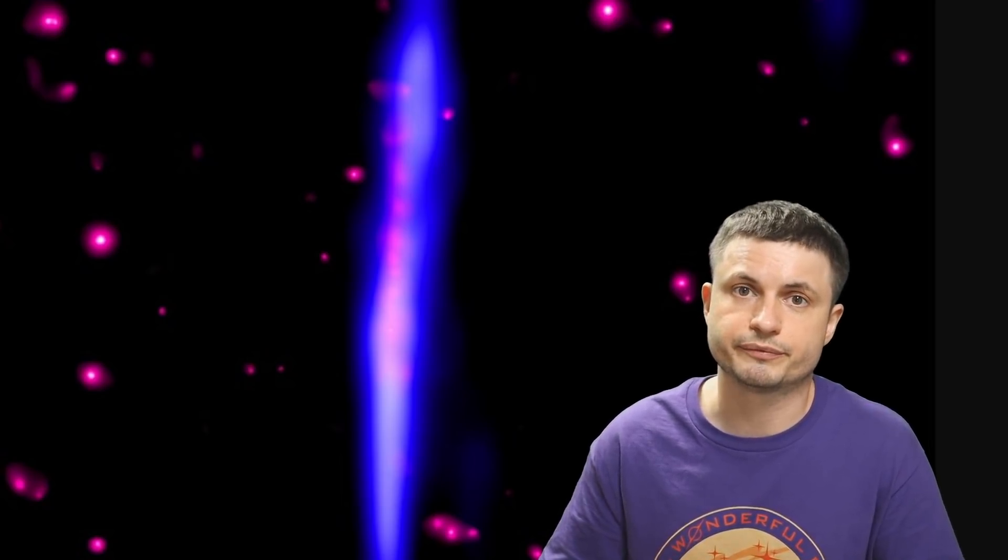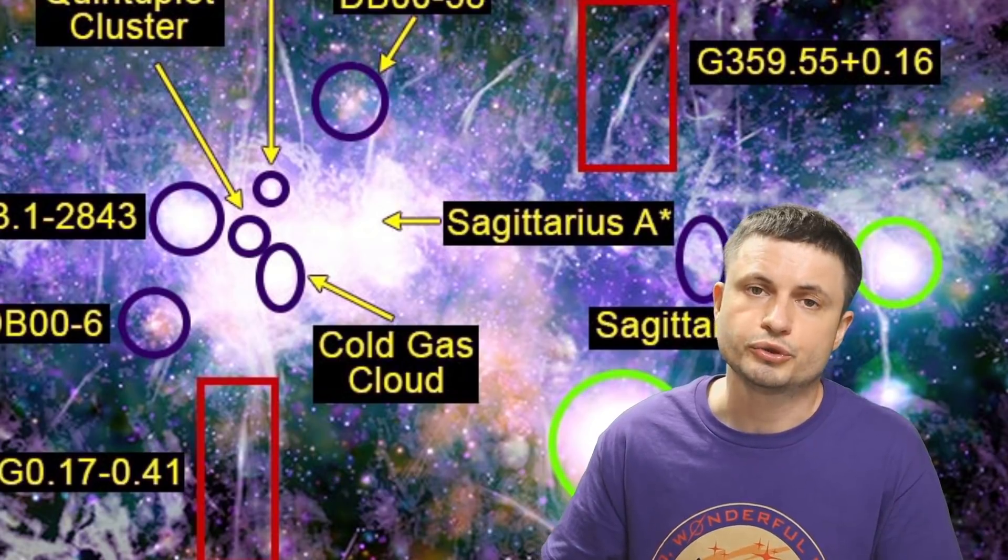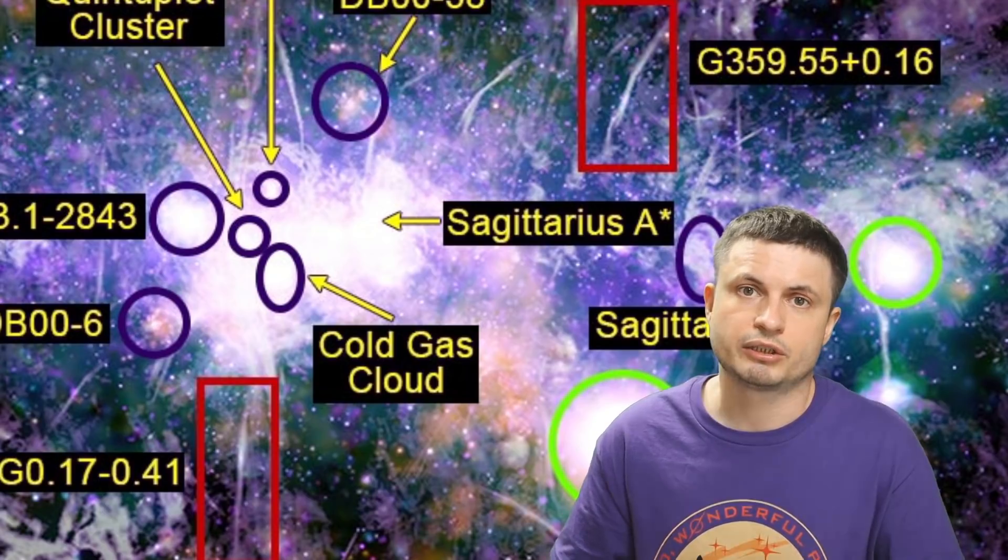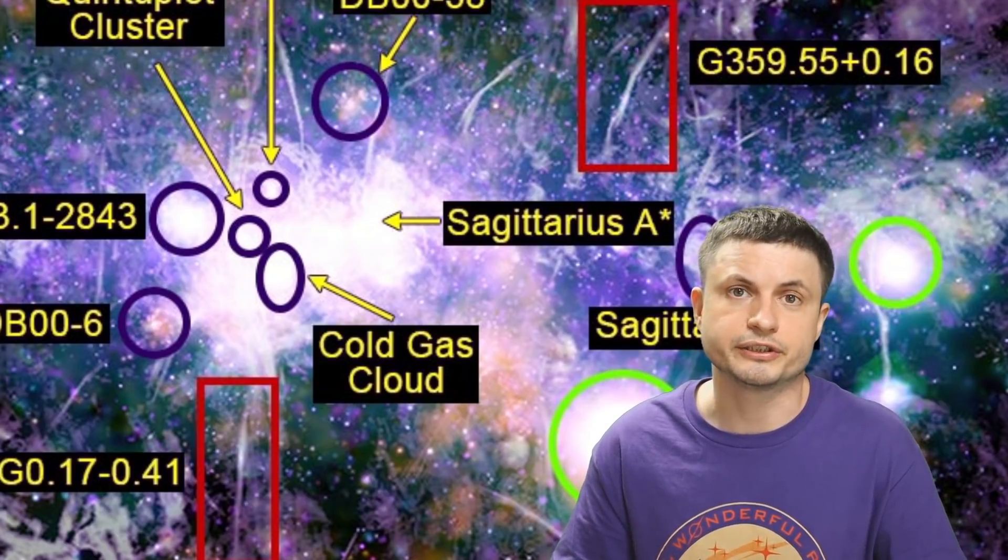It looks like something very similar happens on galactic scales as well. Those two rectangles I showed you before were pointing at these things right here, and this seems to be the result of magnetic reconnection on galactic scales. Both of these features are perpendicular to the plane of the galaxy and also relatively similar in size and structure. They're both approximately 20 light years in length and about 0.2 light years in thickness.